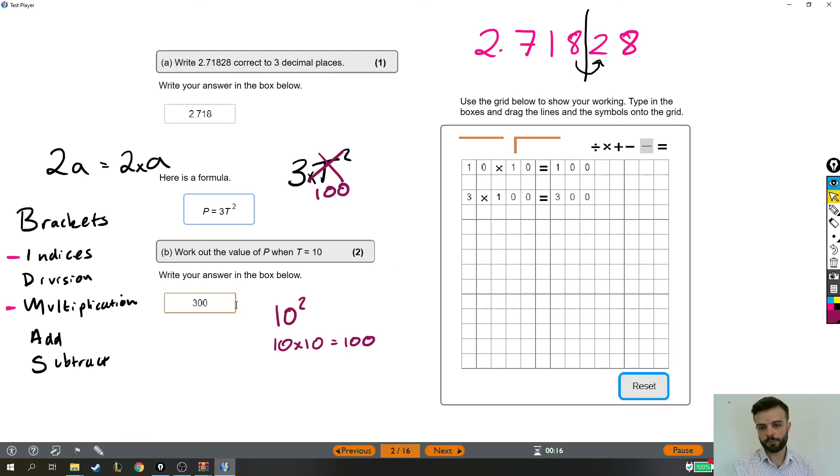So, again, the important parts of that question were knowing that the 3 means 3 times T squared. And also knowing that you have to do the squared first because of BIDMAS. And then, after that, it's just replacing the T with a 10 and then doing the squared and then timesing it by 3. Yep, and that's it for that particular question. Good stuff.